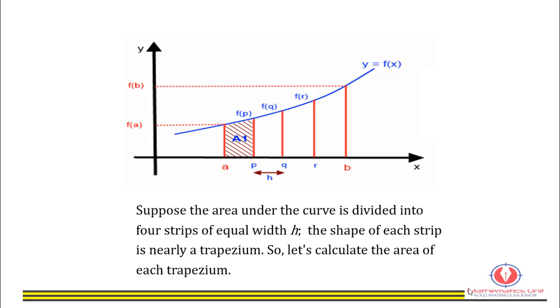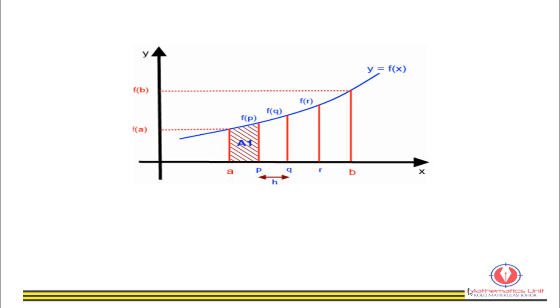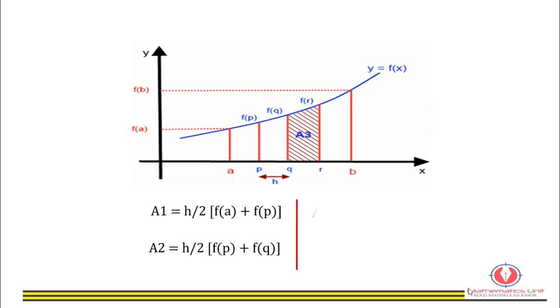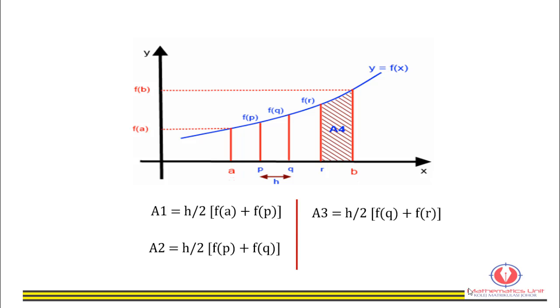Suppose the area under the curve is divided into four strips of equal width h. The shape of each strip is nearly a trapezium, so let's calculate the area of each trapezium: area of A1, area of A2, area of A3, and area of A4.